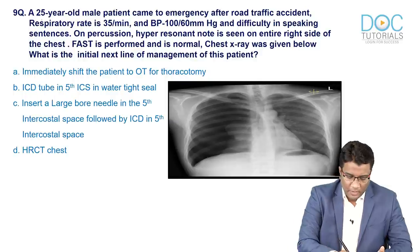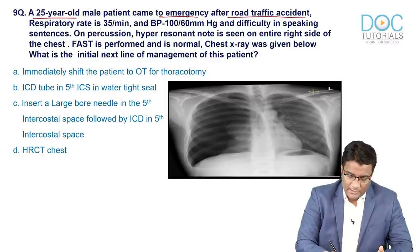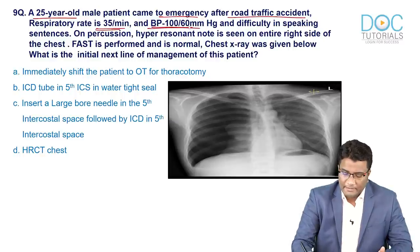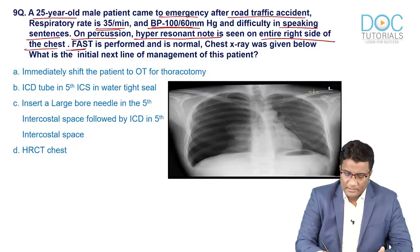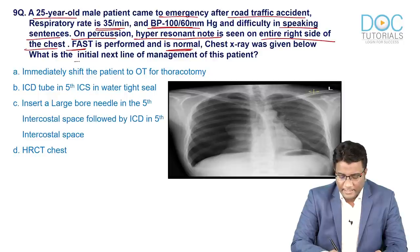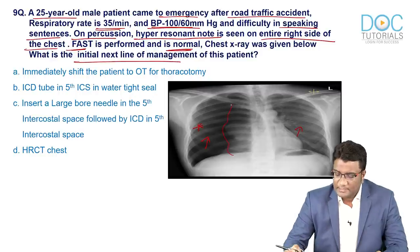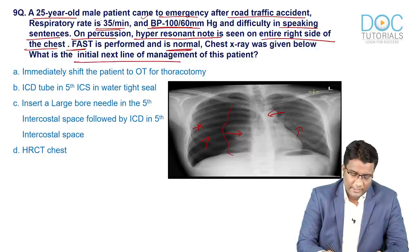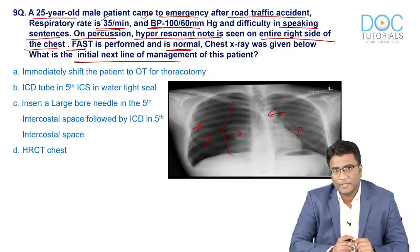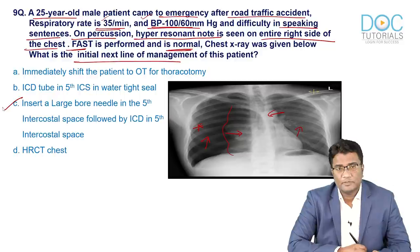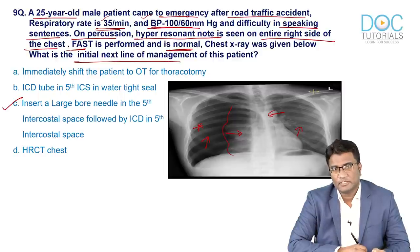Next question: a 25-year-old male post road traffic accident presents with elevated respiratory rate, low blood pressure, difficulty speaking, and hyper-resonant percussion on the entire right side of the chest. FAST is normal. The chest radiograph shows absent bronchovascular markings on the right side, a visceral pleural line with lung collapsed toward the hilum, and tracheal shift to the opposite side. This is tension pneumothorax — initial management is insertion of a large bore needle followed by an ICD tube in the fifth intercostal space.